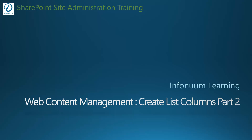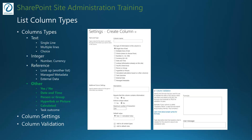Hello again, this is Chirag. In this video let's take a look into more list column types in SharePoint. In part one of adding list columns we looked into text, integer, and reference column types. Now let's look at other column types like Yes/No, Date and Time, Person or Group, Hyperlink or Picture, and Calculated column.